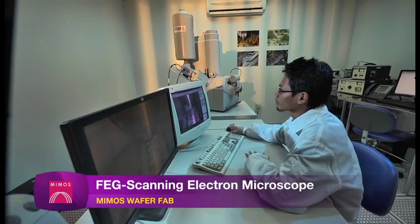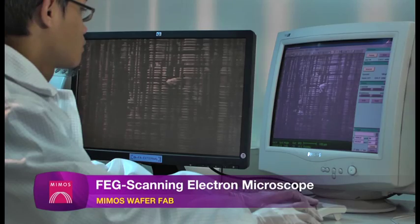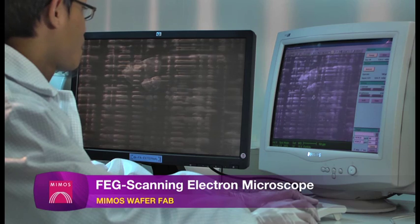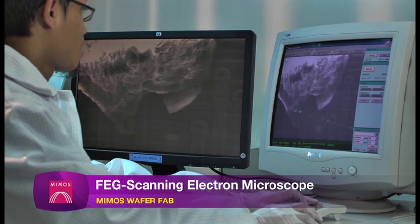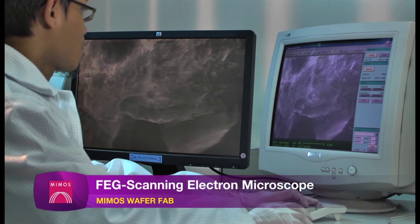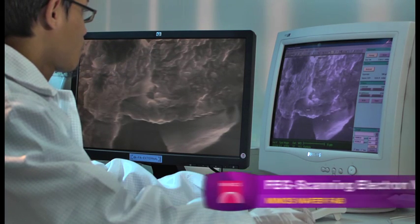FEG Scanning Electron Microscope is an ultra-high resolution inspecting system. It is able to reveal topography or texture and morphology or the shape and size of samples at very high magnifications.